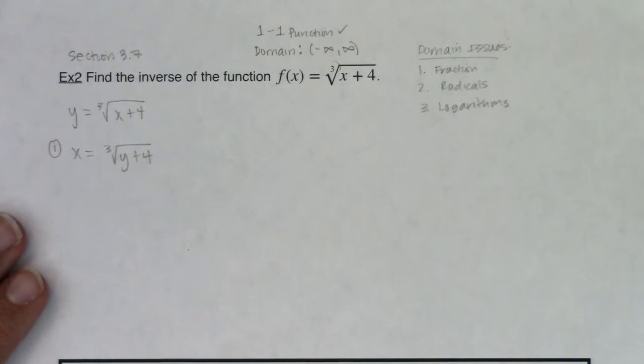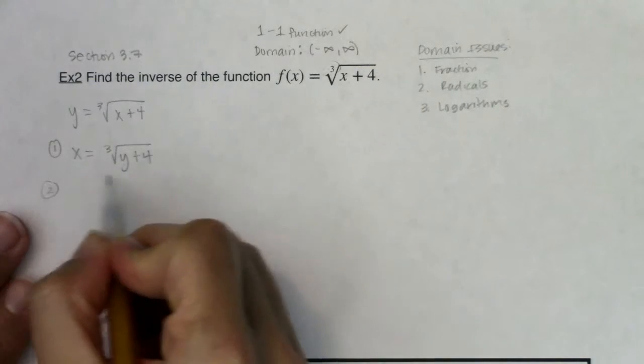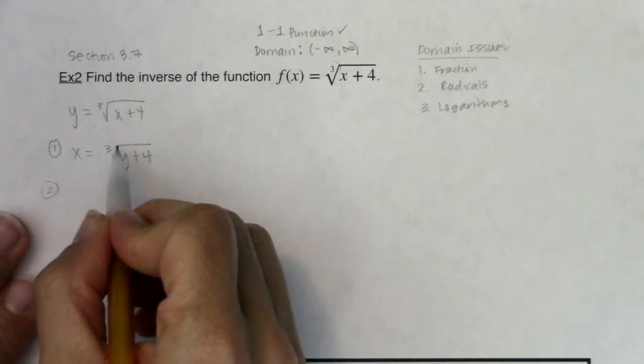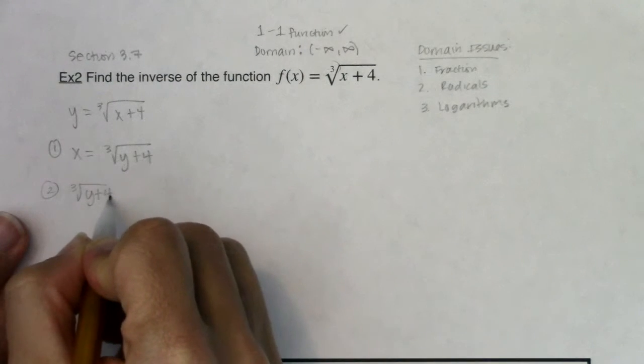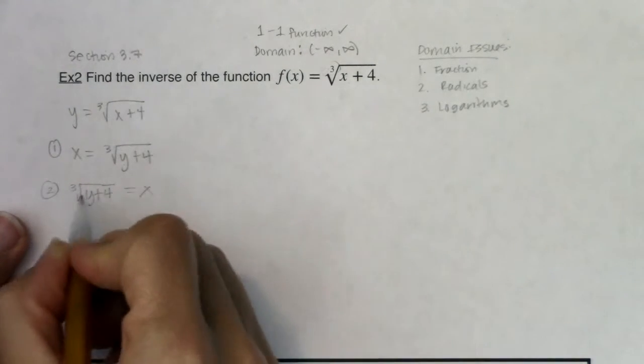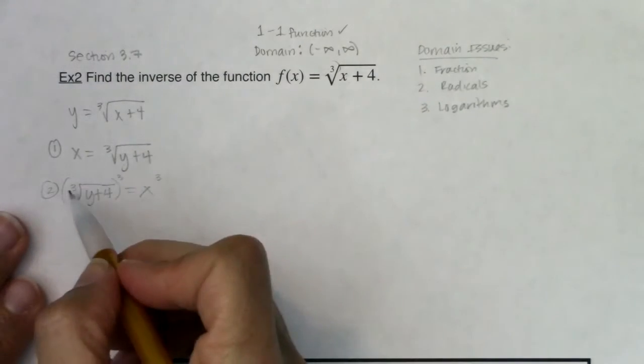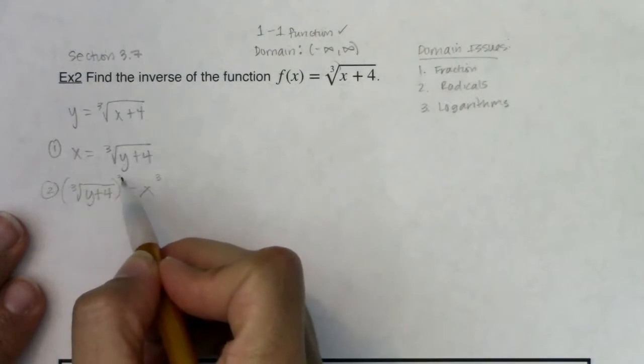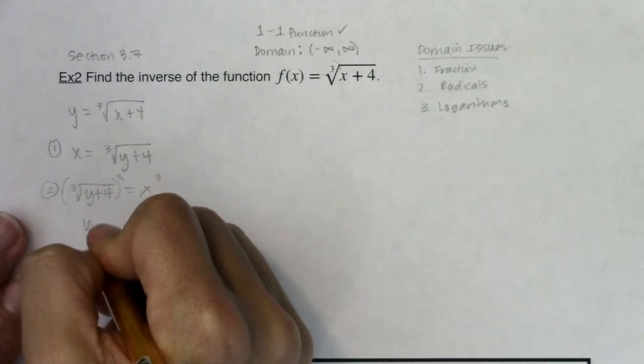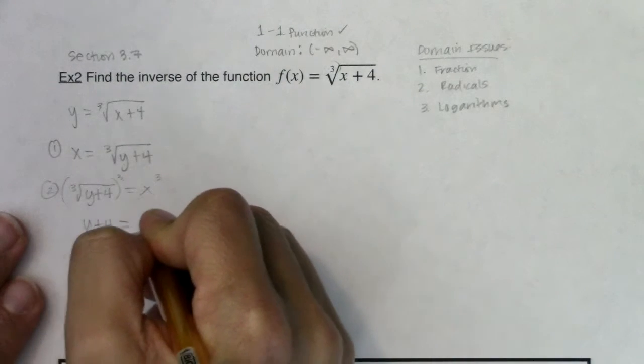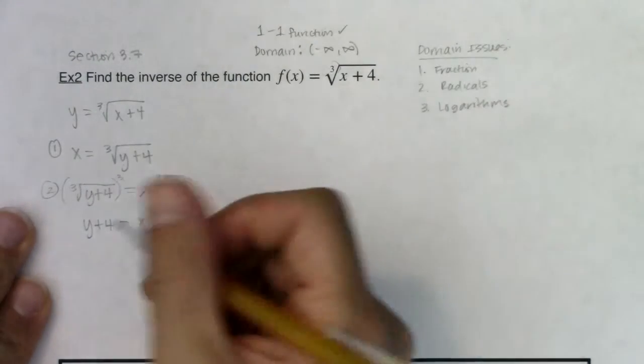From there, the next thing you want to do is solve for your new y. So I want to get this all by itself. Me personally, I like the variable that I'm being asked to solve for on the left side of the equation. When I have a cube root, if I want to undo that, I need to cube both sides. When I cube something that is a cube root, those two operations are going to cancel. So I just get y plus 4 over here, and I get x cubed over here.